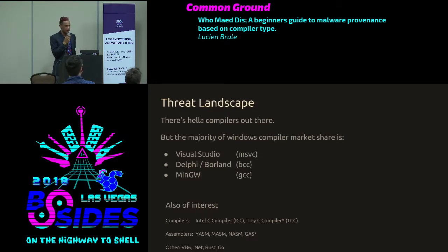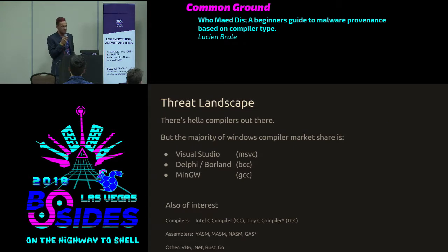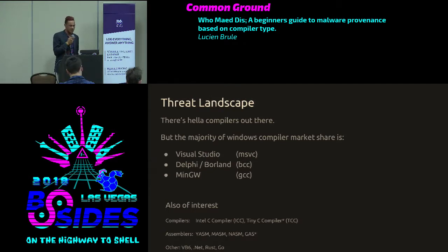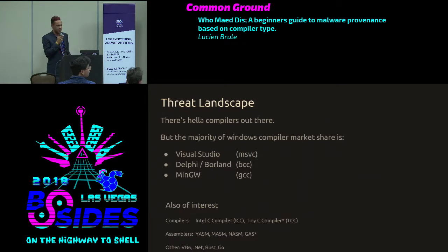Fun facts and figures on the threat landscape: the majority of Windows compiler market share is Visual Studio — any new Windows binary compiled in the last couple years is going to be Visual Studio. You see a lot of Delphi and Borland after that. Then there's the niche but significant MinGW, the Windows implementation of GCC. Also of interest: the Intel C compiler, the Tiny C compiler, various assemblers like YASM and NASM, VB6, the .NET framework, and the Rust and Go compilers.